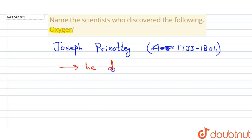...oxygen in 1774. Okay, so the name of the scientist was Joseph Priestley, and he discovered oxygen in 1774. Thank you.